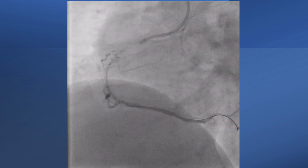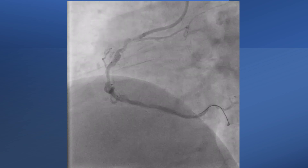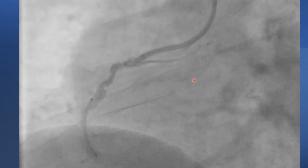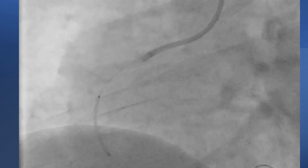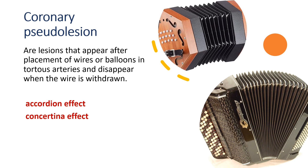After delivering a stent into the area of concern, we noticed multiple lesions appearing at the mid and proximal part — this is a magnified view. We can see these lesions appearing in this area that were not present initially. These are called coronary pseudo-lesions: lesions that appear after placement of wires or balloons in tortuous arteries and disappear when the wire is withdrawn. Also known as the accordion effect or concertina effect.